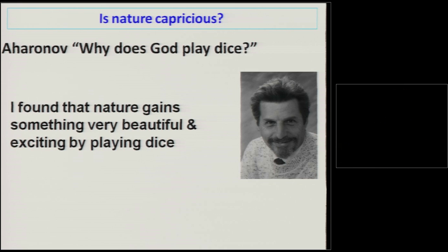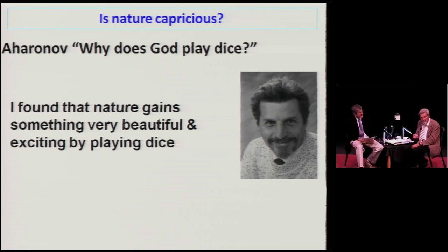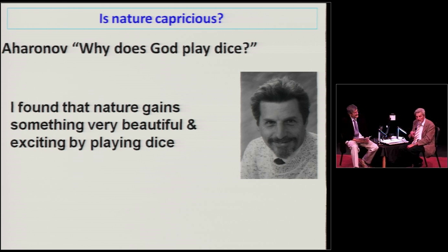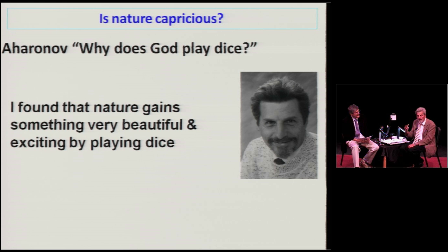The answer I give to the question of why does God play dice is exactly the minimum necessary uncertainty in order to allow time to appear in a new light. That new light is that the present is affected not only by the past but also by the future.